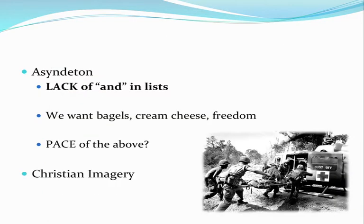The contrasting idea of polysyndeton is asyndeton — a lack of conjunctions in lists. For example: 'We want bagels, cream cheese, freedom.' We've taken out all the 'ands' between items, including before the last one. That is different from the norm, which would be 'we want bagels, cream cheese, and freedom.' With asyndeton, the pace speeds up — things go by quicker. The emphasis the reader is supposed to pay attention to most is that last item. Because we're expecting some sort of pause before the end and don't get it, we more rapidly approach the end. So that last word — maybe a contradictory word — is something we should pay attention to.